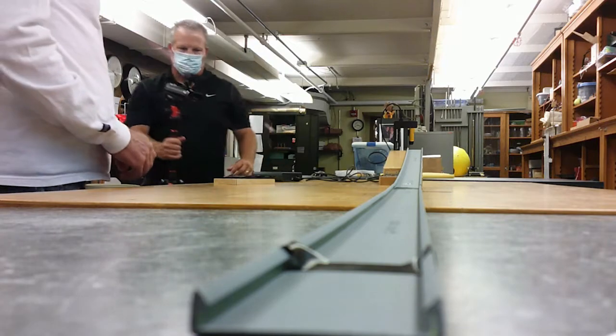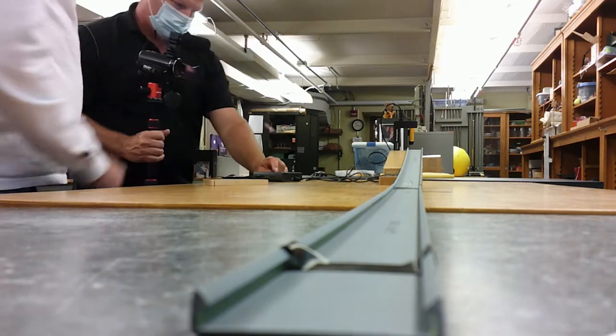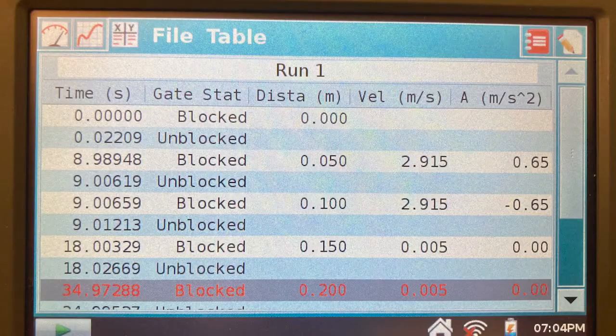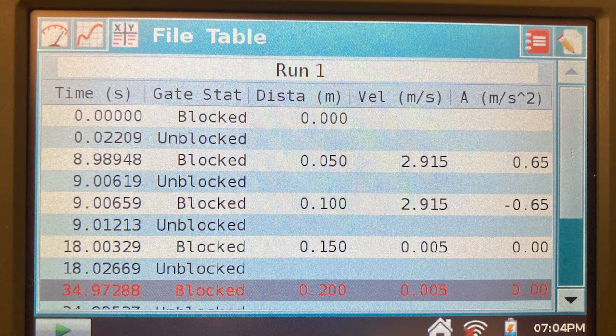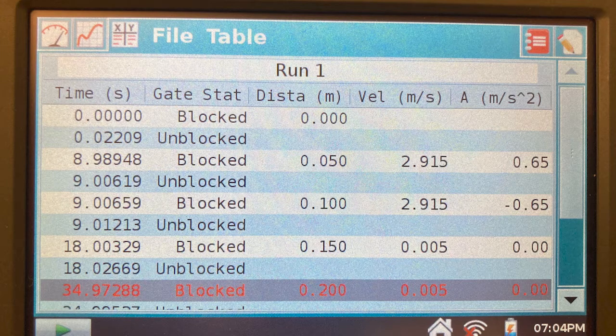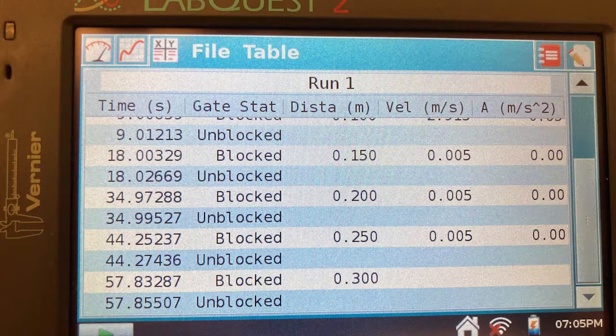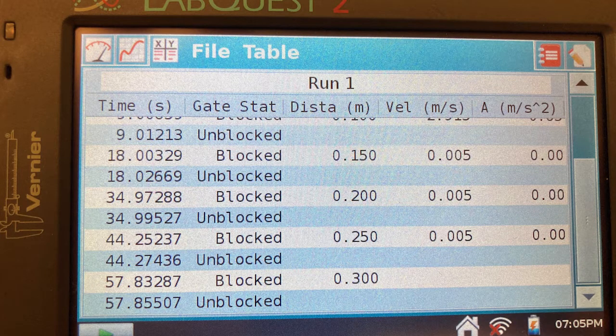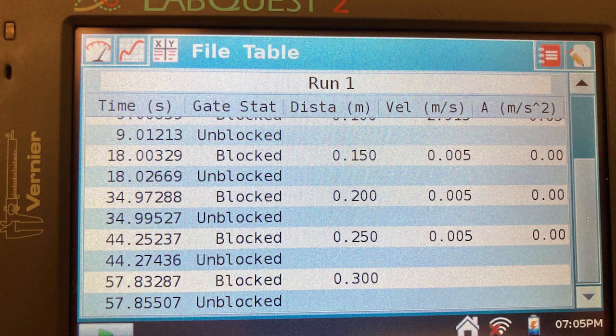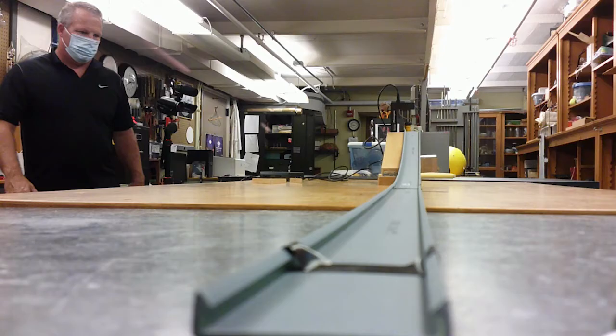And trial five. Okay, so let's take a look at our data. Let's see what we got. Okay, so what we're looking at is the time all the way on the left. And we're going to subtract the blocked and unblocked, right? Right. So you're just basically doing, like it says in the lab, subtracting so you can get the time that the car was in the line of the photo gate. Correct.